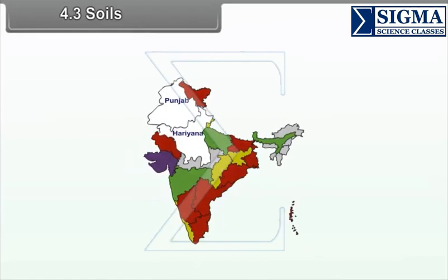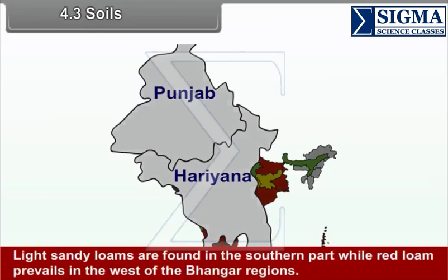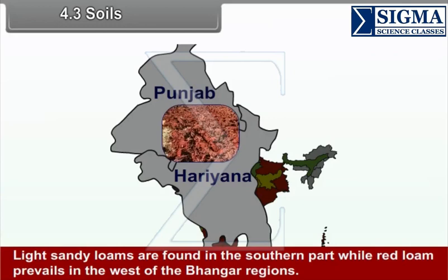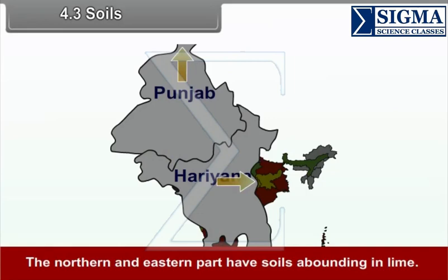4.3 Soils. The soils are predominantly alluvial. Light sandy loams are found in the southern part, while red loam prevails in the west of the Bhanga regions. The northern and eastern parts have soils abounding in lime.